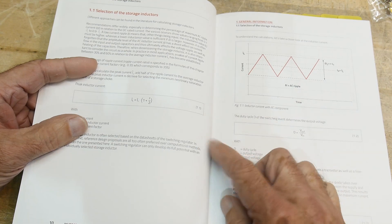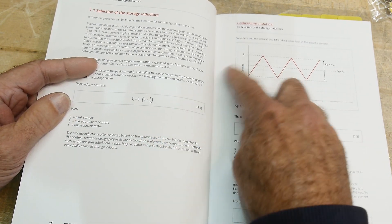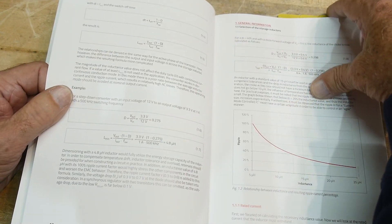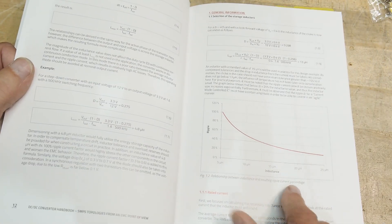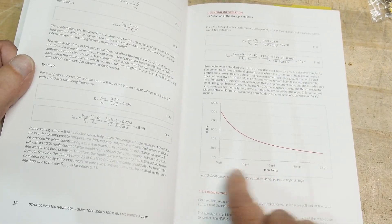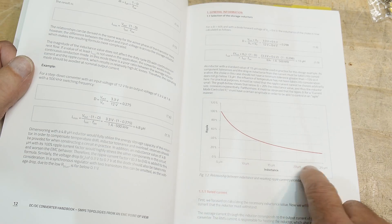And it does have a lot of formulas. It talks about ripple in the topology. It talks about how inductance, if you have a variable inductance, it will cause your ripple to change.